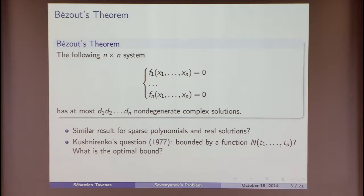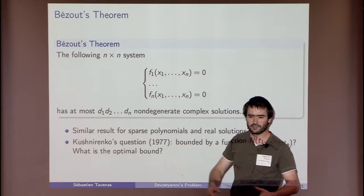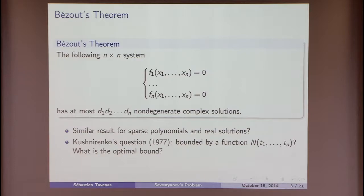The t's represent the sparsity of the functions — that is, the number of monomials or terms. So we assume we have a system where f1 is t1-sparse, f2 is t2-sparse, and so on. There exists a bound which depends only on the sparsity and not at all on the degree.